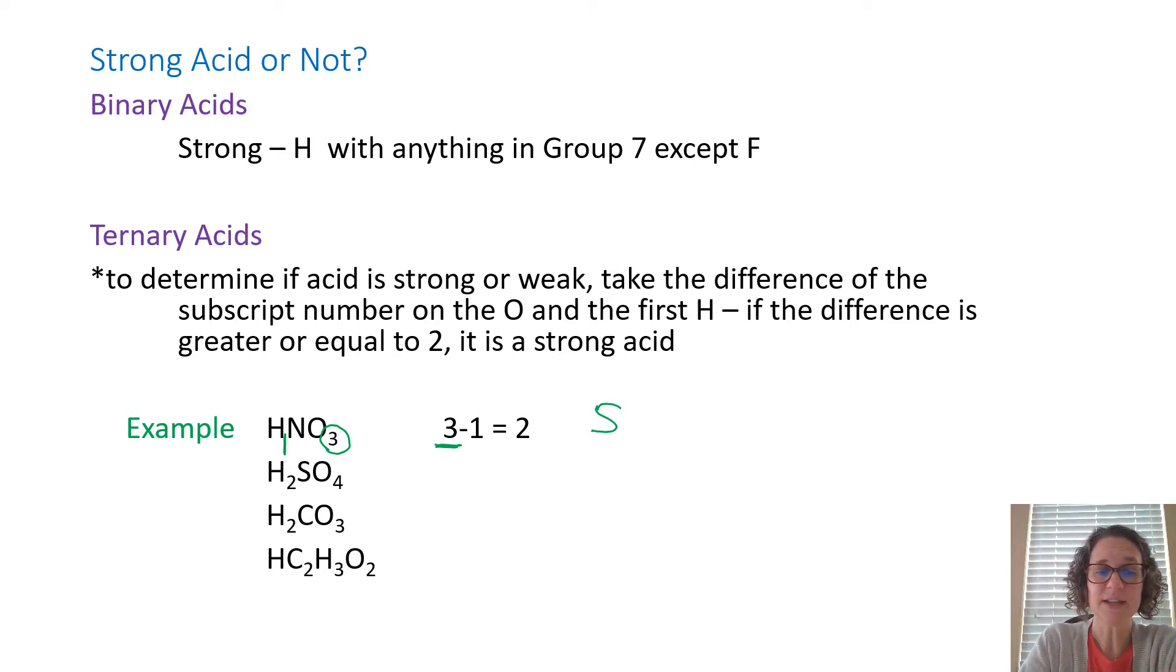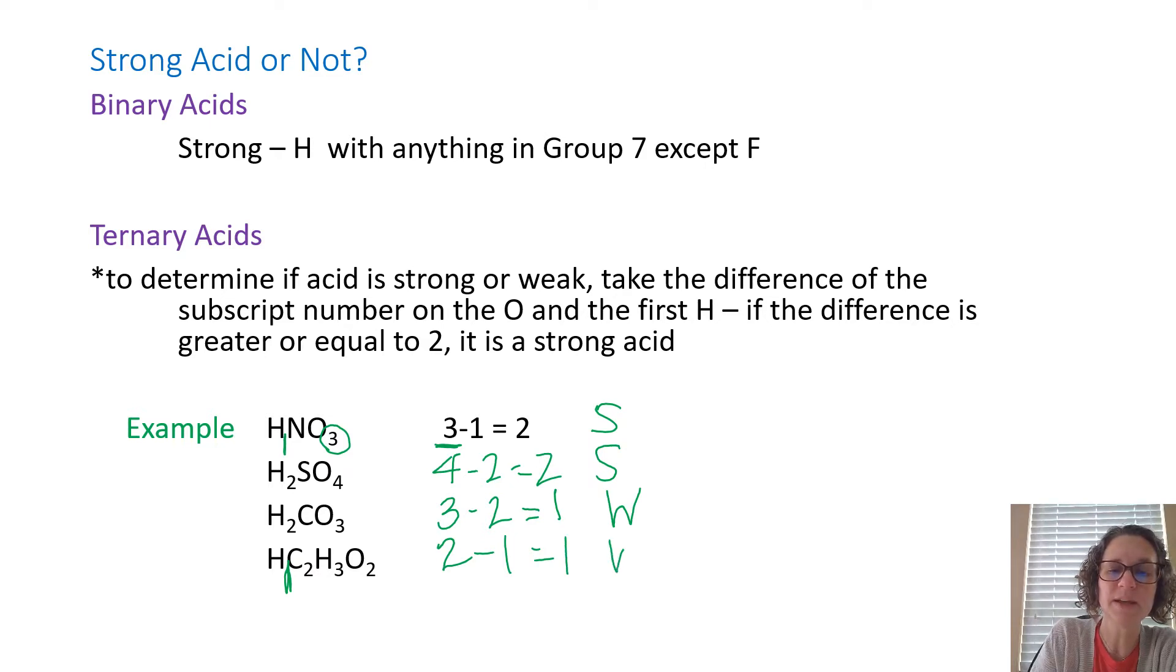Then the next one, sulfuric acid, I've got four minus two equals two. So there's another strong acid. Carbonic acid, and I know some of these, I just told you the answers, but for carbonic acid, I have three minus two, the three from the O and the two from the H. That is one, and so that is weak. And then that last one, this is where that the first H becomes important. So you would still take the two on the O, and then that one is that first H. So it is two minus one, which is one, and that is weak. So you totally ignore the H's in the middle if there are any there. All right, so pretty easy. You just have to kind of remember the process.